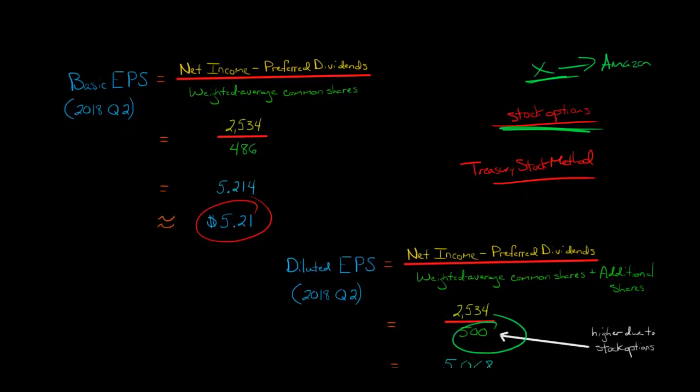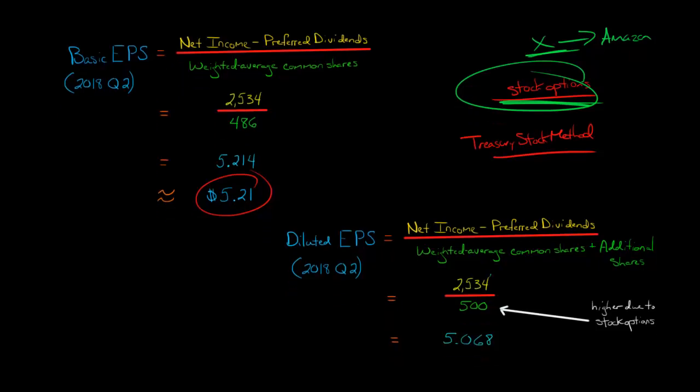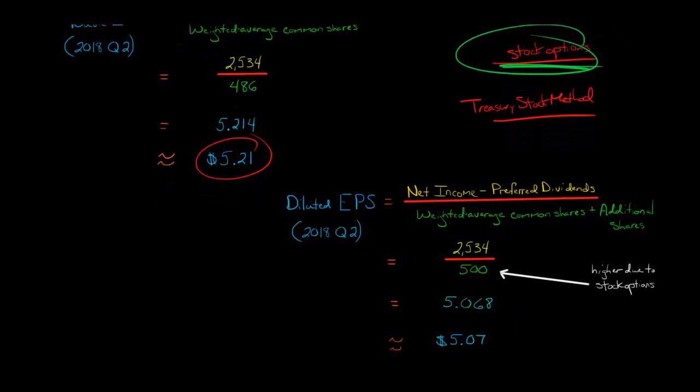So the number in the denominator is larger than before. Before it was $486 million, now it's $500 million. As we're saying that, if these people all exercise their options, Amazon might have to issue some additional shares. Then they could have as many as 500 million shares outstanding instead of 486. And if we increase the denominator without affecting the numerator, then that's going to decrease the earnings per share. And so it's going to be 5.068, and Amazon, we just round that, and it goes to $5.07.